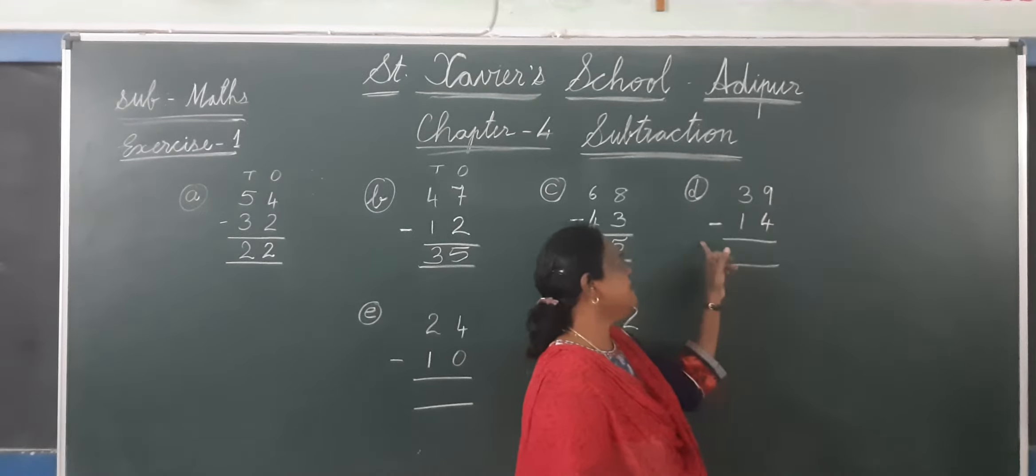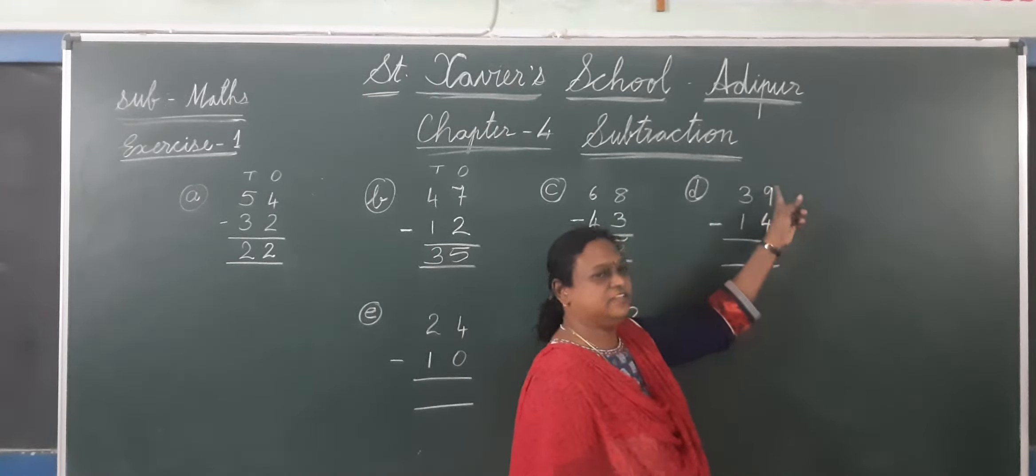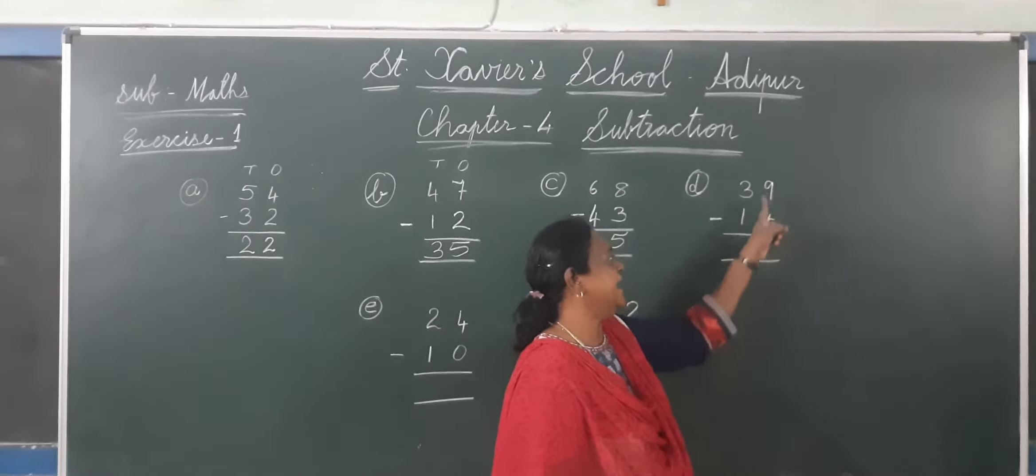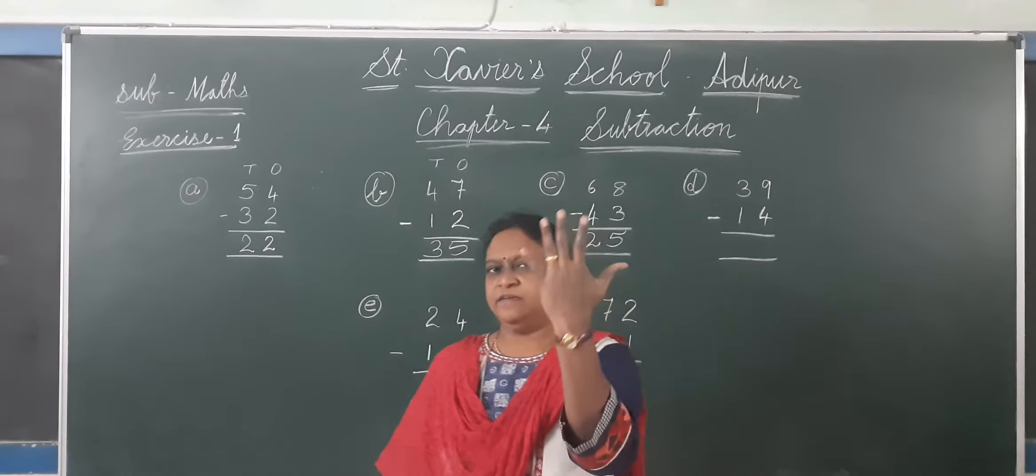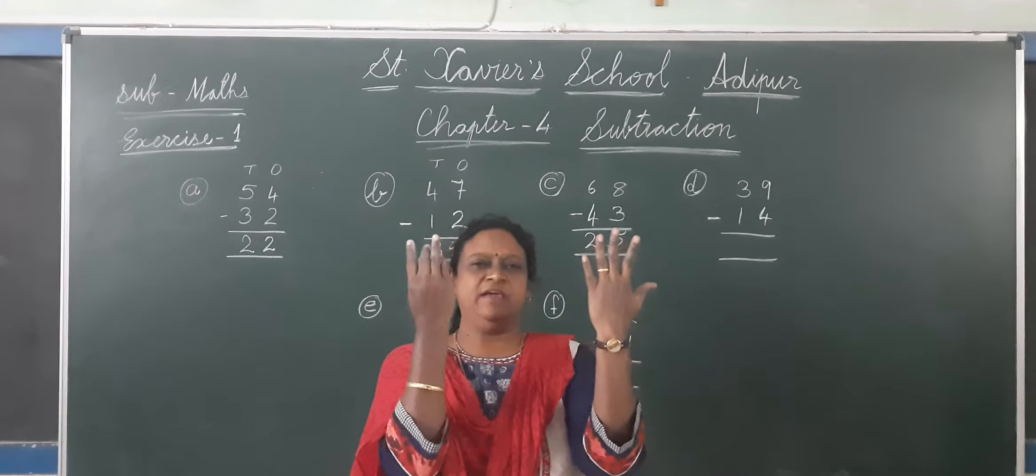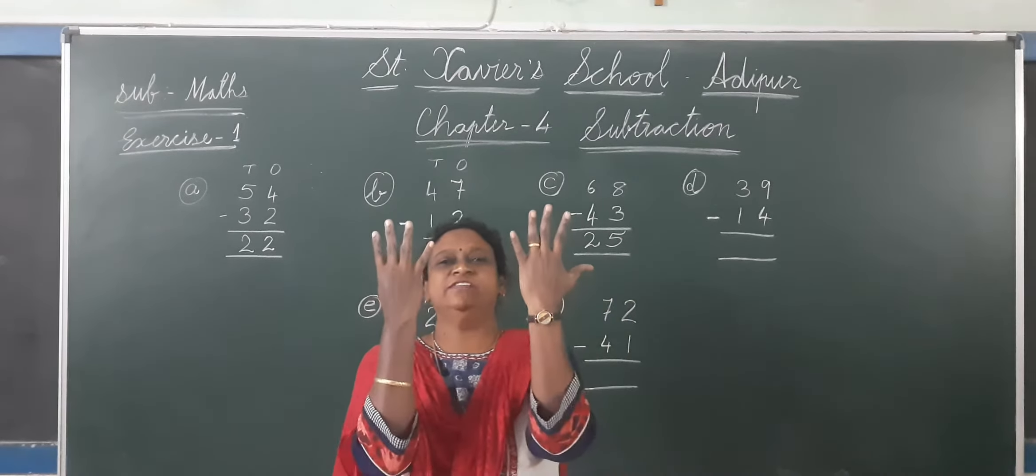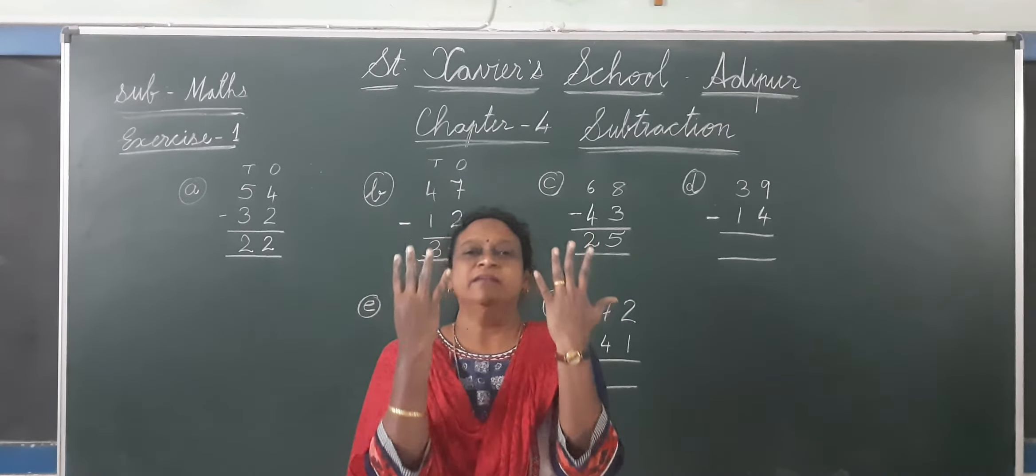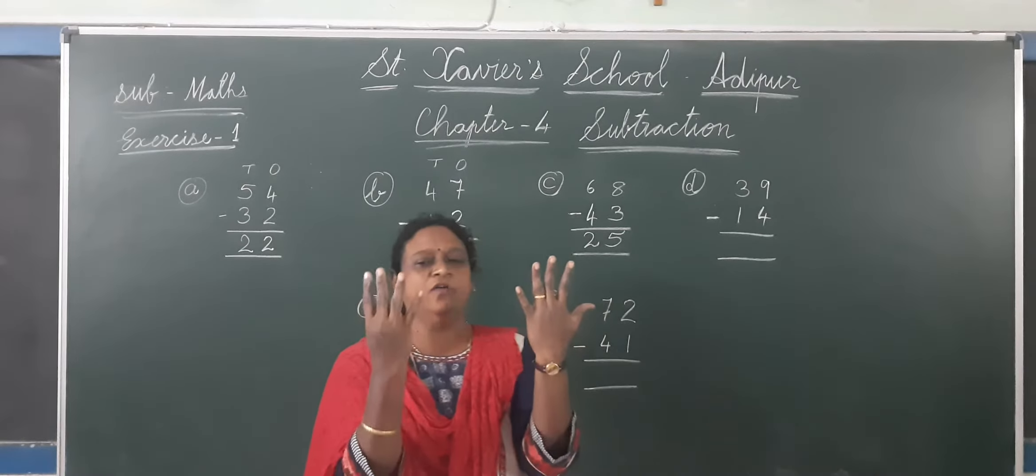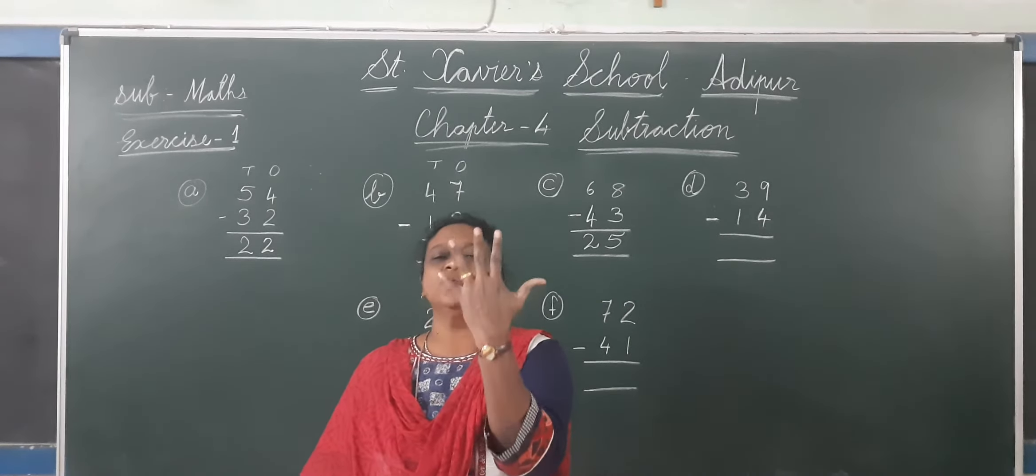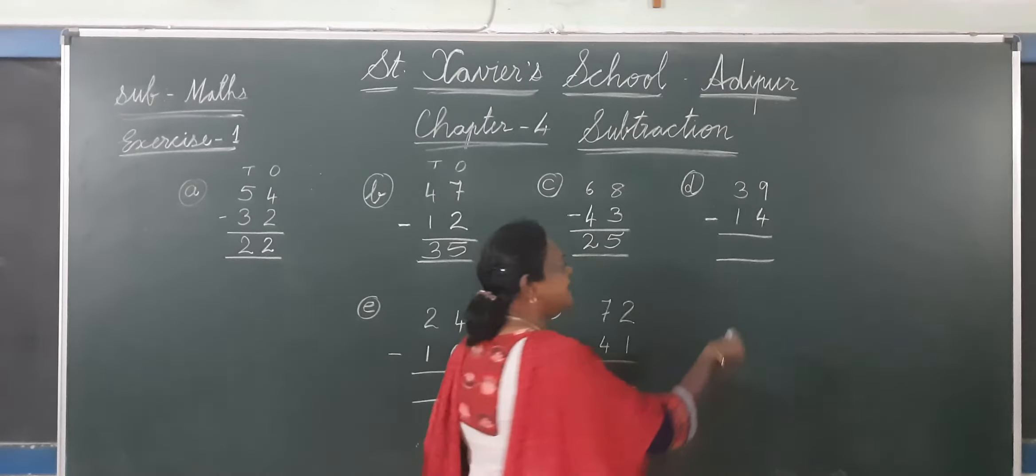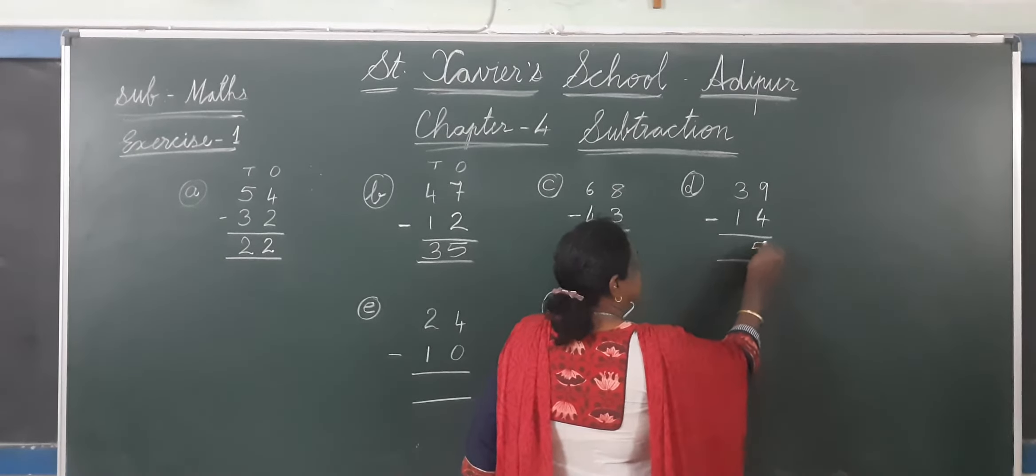Now D. 39 minus 14. So first what will it be? 9 minus 4. How many fingers? 5. Now it's 9. So this will be how many fingers? 9. Now minus 4. 1, 2, 3, 4. So remaining is 5 fingers. So you write here. 5.